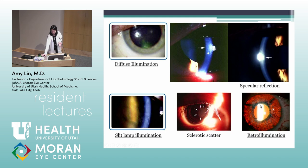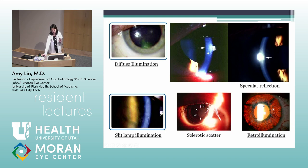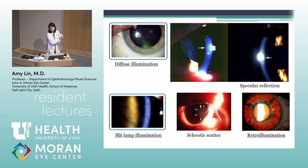Retro illumination is fairly commonly used, most commonly to look at iris defects — it's a good way to see whether or not you have a patent peripheral iridotomy. You can also see fine details in the lens and cornea with retro illumination. What you do is have your beam straight on into the eye going into the pupil, and you can see what reflects back.